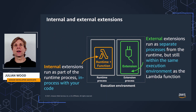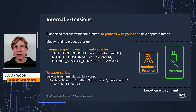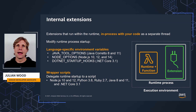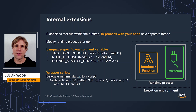Lambda supports two types of extensions: internal and external. Internal extensions run in-process with your code as separate threads, but still within the runtime process. External extensions run as completely separate processes, but still within the same execution environment as the Lambda function. Internal extensions allow you to configure the runtime environment and modify the startup of the runtime process. The runtime process controls the lifecycle and starts and stops internal extensions. They operate using language-specific environment variables and wrapper scripts, letting you preload code during initialization without modifying your actual function code.